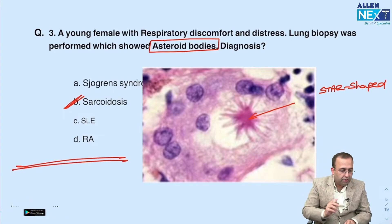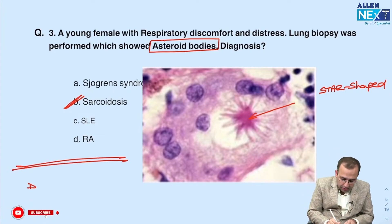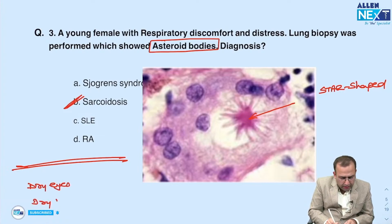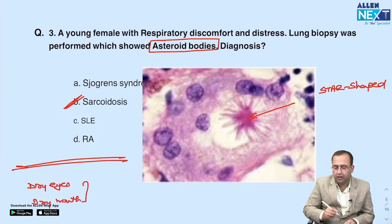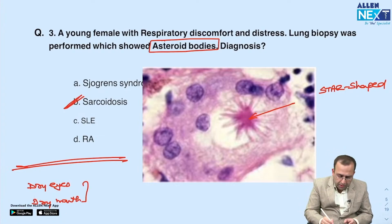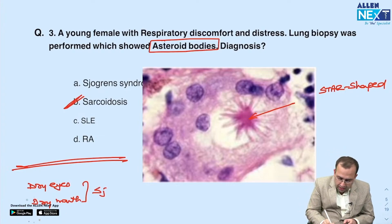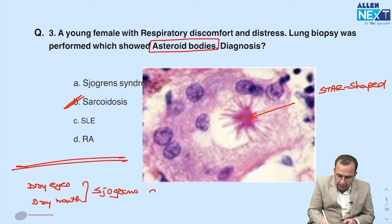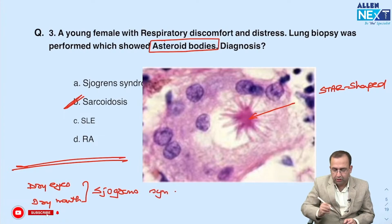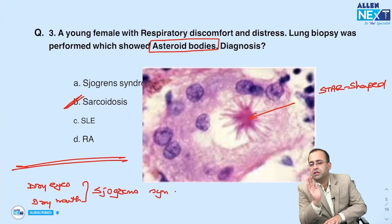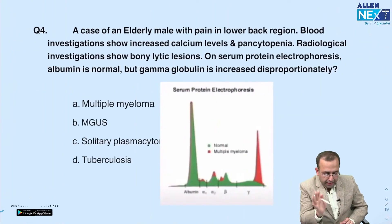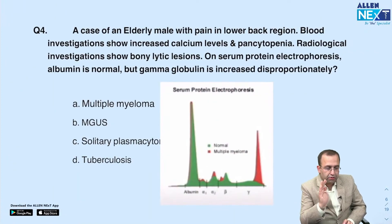Next, a straightforward question on Sjögren's syndrome: dry eyes and dry mouth. It was written simply — dry eyes and dry mouth seen in Sjögren's syndrome, not SLE or systemic sclerosis. This is a feature of Sjögren's syndrome. Simple, straightforward — done.